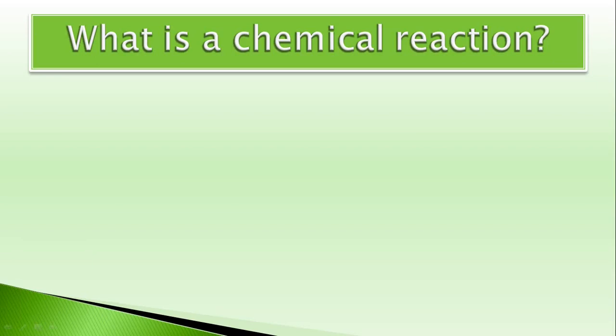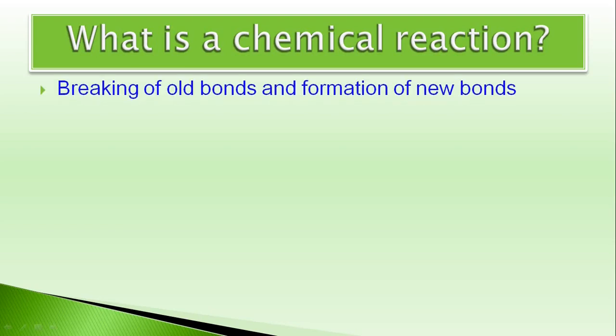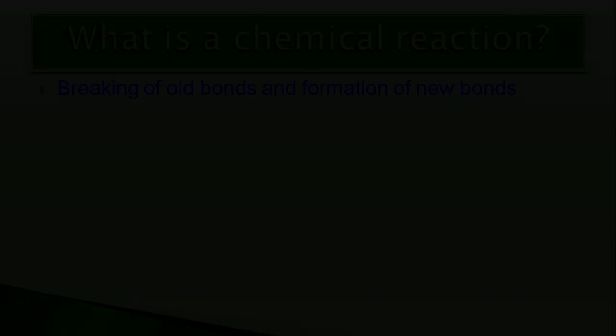Aap apne gyan ke aadhar peh bata sakte hain ki chemical reaction ka matlab purane bonds ka tootna aur naye bonds ka banna. That is, breaking of old bonds and formation of new bonds. It can also be defined as breaking of old bonds present in the reactants and formation of new bonds, which lead to formation of product.